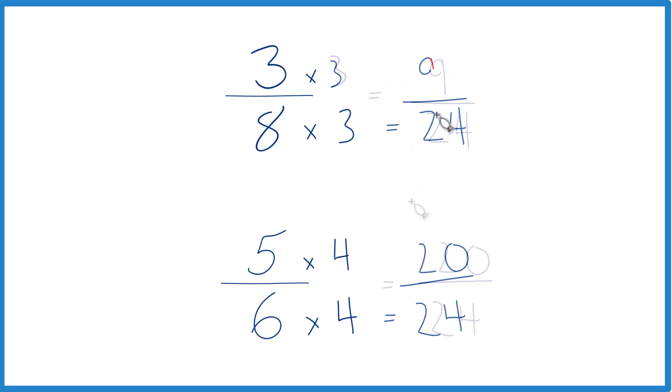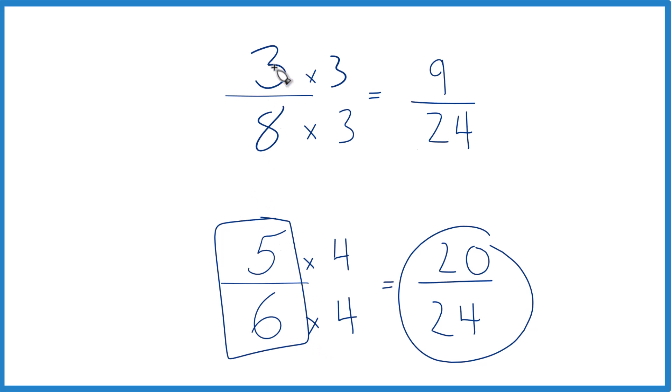That gives me 9. So now I have the same denominator, I just compare the numerators. And 20, that's larger than 9. So 20 24ths, that's larger than 9 24ths. And 5 6ths, that's going to be greater than 3 8ths.